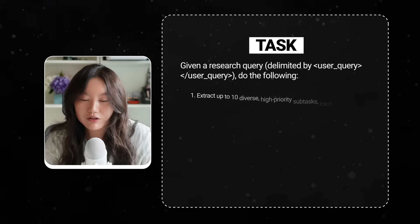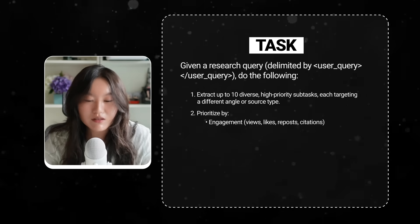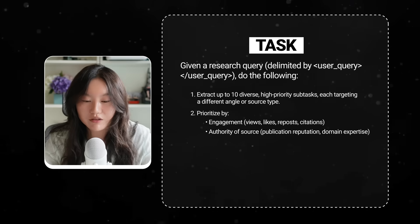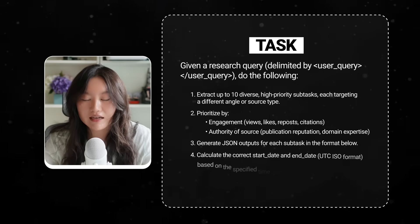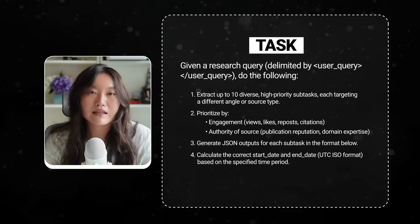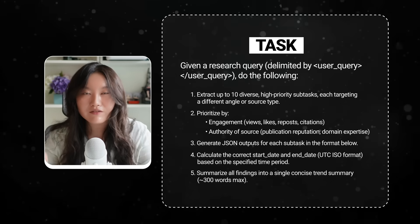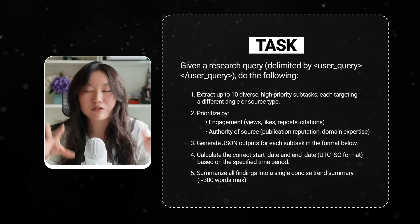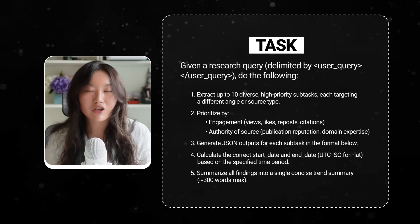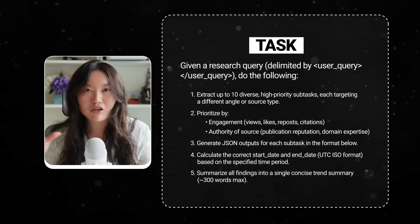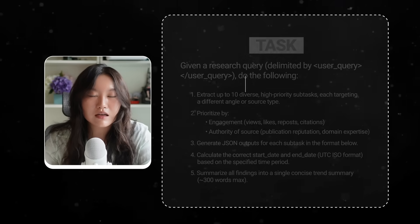Do the following: Step one is to extract up to 10 diverse high-priority subtasks, each targeting a different angle or source type. Step two is to prioritize by engagement — such as views, likes, repos, and citations — as well as authority of source, such as publication reputation and domain expertise. Step three is to generate a JSON output for each subtask in the specified format. Step four is to calculate the correct start date and end date in UTC ISO format based on the specified time period. Step five is to summarize all findings into a single concise trend summary of approximately 300 words max.